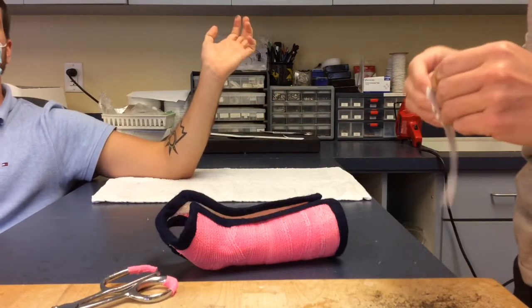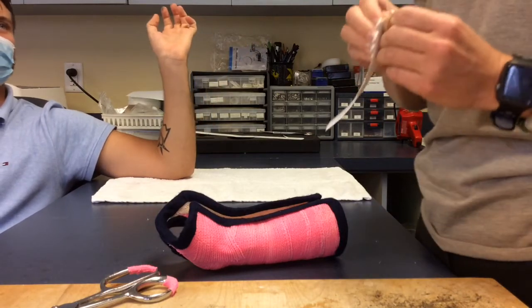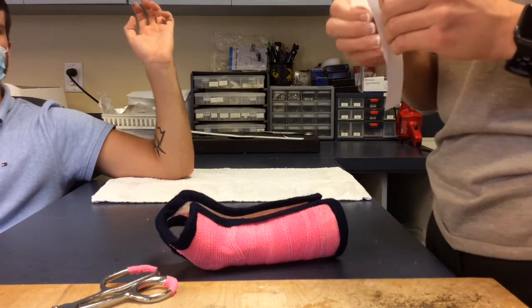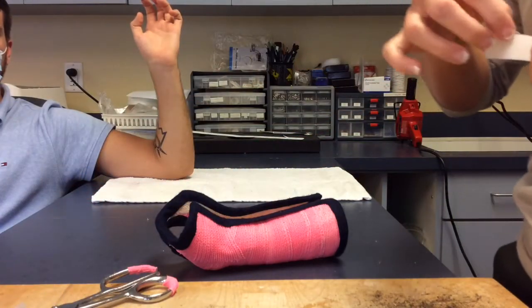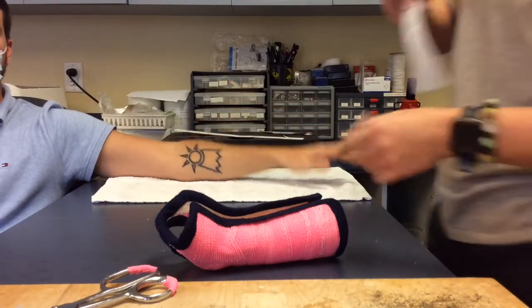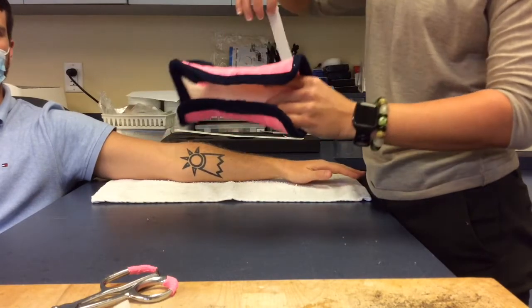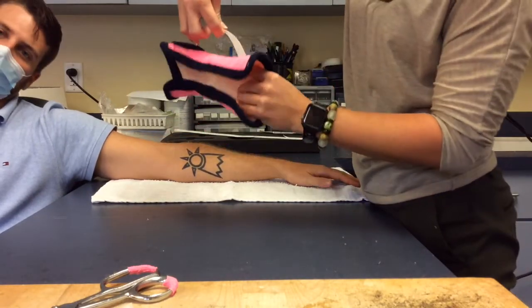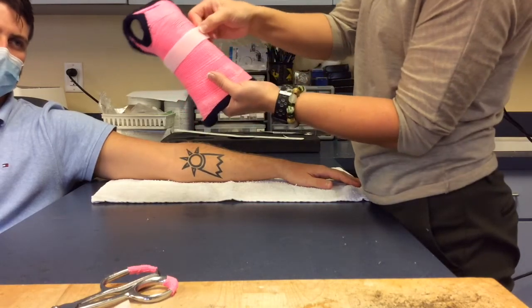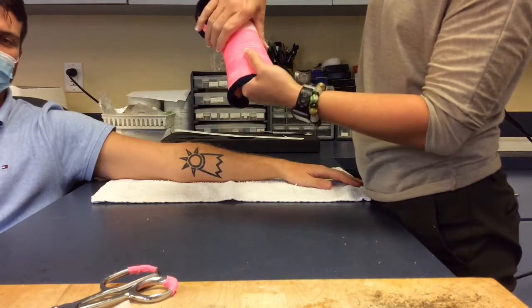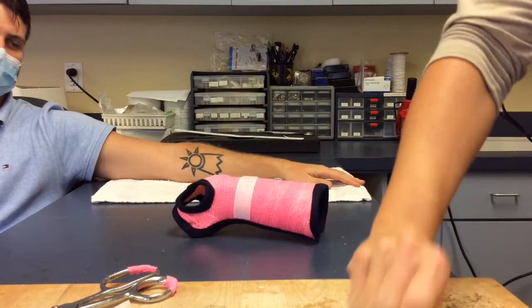Next, I will be applying the hook velcro. I am going to be using two pieces and two straps for the patient. Another trick I learned is by using a heat gun, you can heat up the sticky edge of the hook velcro and that will help apply the velcro better to the cast. It will also allow it to stay better.